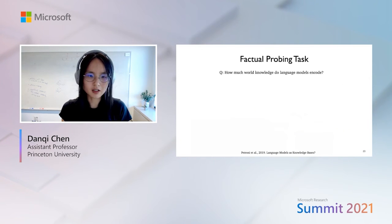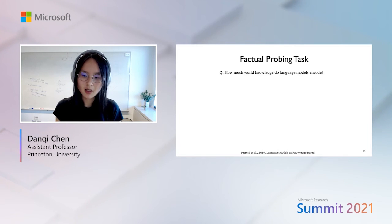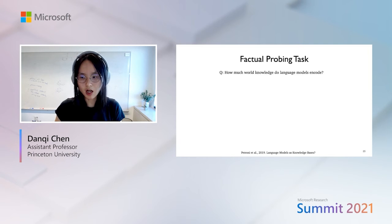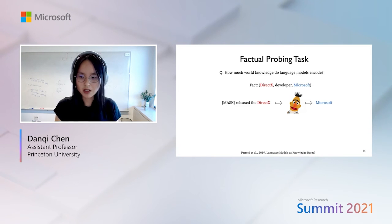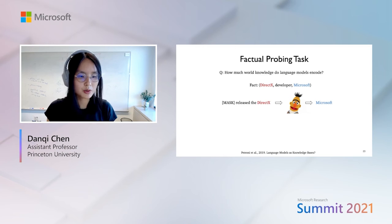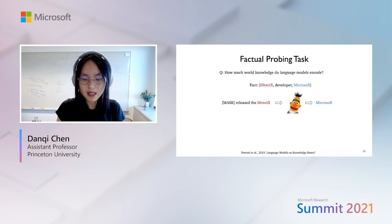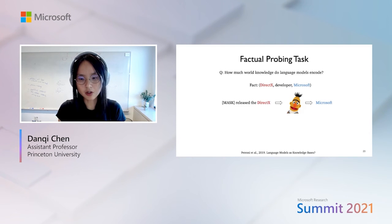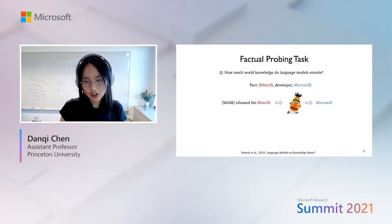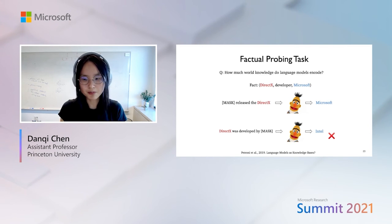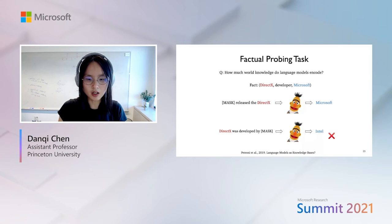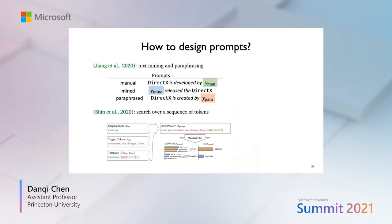The factual probing task measures how much world knowledge language models encode. For example, for the fact "DirectX, developer, Microsoft," we write a prompt like "[MASK] released DirectX" and ask the model to fill in the blank with "Microsoft." If we use a different prompt, the result could be wrong — the model might output "Intel." Prior work has attempted to improve this using text mining, paraphrasing, or searching over discrete token sequences, as in the AutoPrompt work.